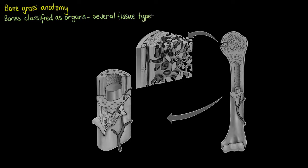Starting with the overall appearance of a bone, we're going to notice that we've got one end at the top, a long thin portion in the middle, and a stumpy kind of end at the bottom as well. This is a long bone, and we've got the top, the middle, and the base — these all have specific names.